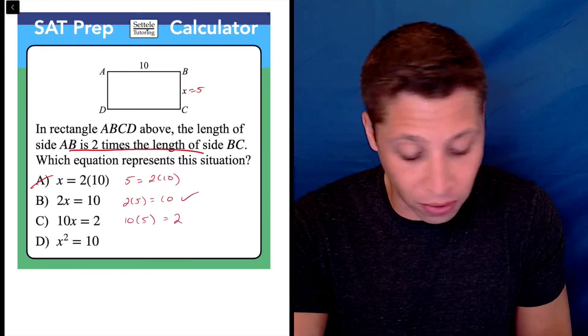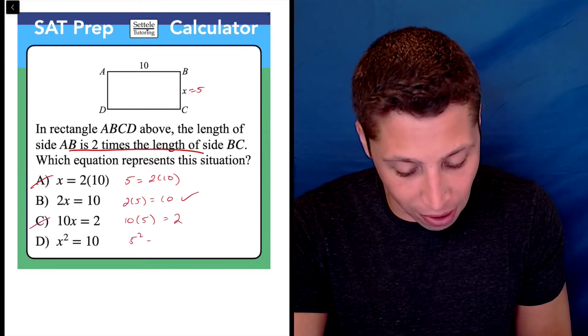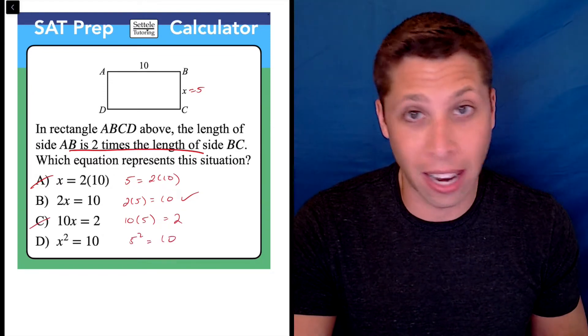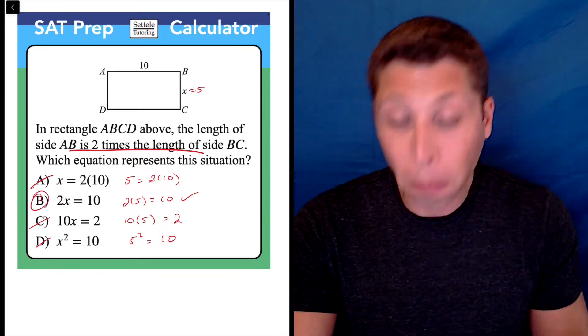10 times five is 50, not two. And in this case, we have five squared is equal to 10, and five squared is 25. So there's our proof.